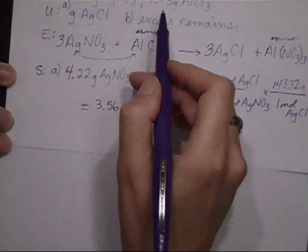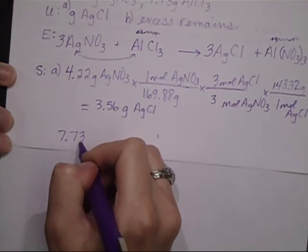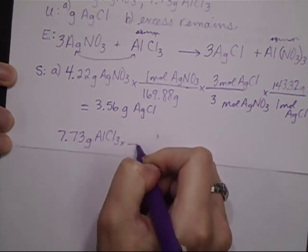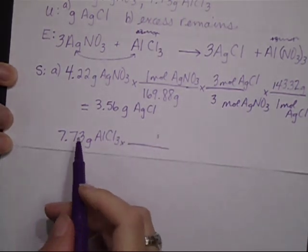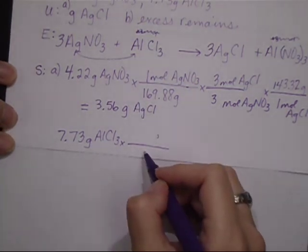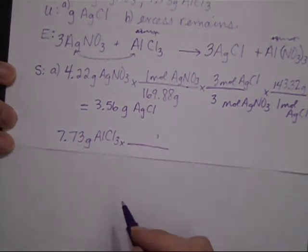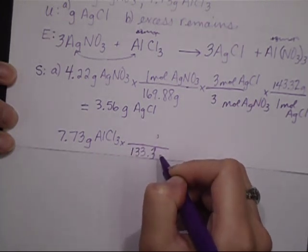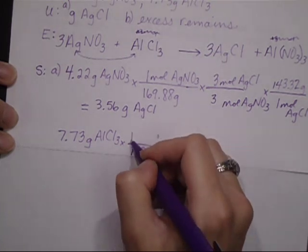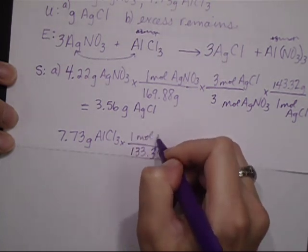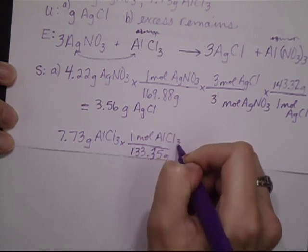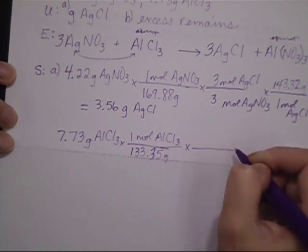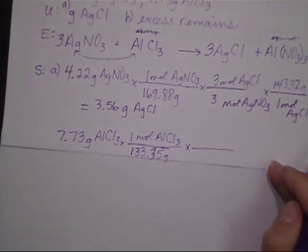So now I have to do the same thing over again except with the aluminum chloride. 7.73 grams of aluminum chloride. Start by getting to moles, and molar mass is 133.35 grams in one mole of aluminum chloride.